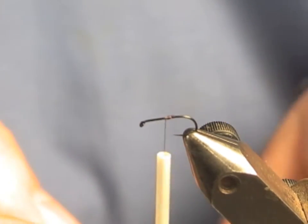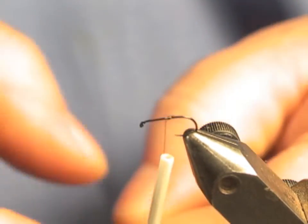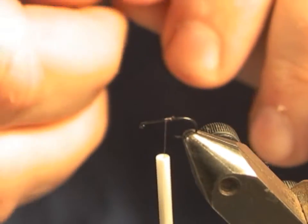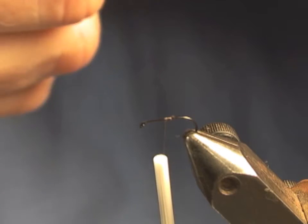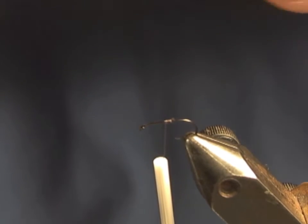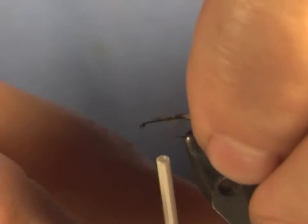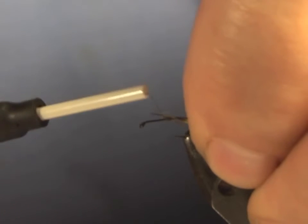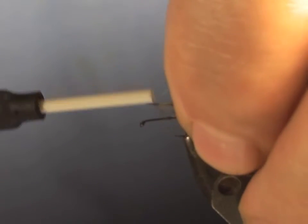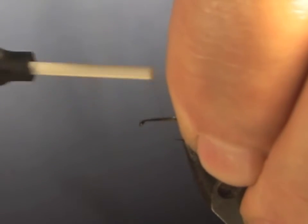You want to use cheap hackle because the hackle doesn't really float the fly. The foam floats the fly. This happens to be a grade 2 neck because I forgot the black hackle at home and had to make do with what I have here. But the hackle really doesn't matter that much.